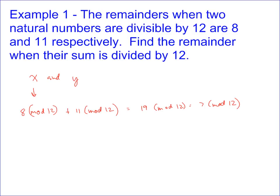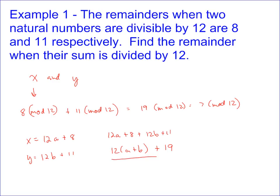Another way to think about this is to say x equals twelve times a plus eight, and y equals twelve times b plus eleven — that's the division algorithm. Adding those together gives twelve a plus eight plus twelve b plus eleven, which is twelve times (a plus b) plus nineteen. When divided by twelve, the twelve(a+b) part contributes zero remainder, so you just do nineteen divided by twelve and get remainder seven. Understanding modular arithmetic alongside algebra can be very helpful, and we'll use that later on.